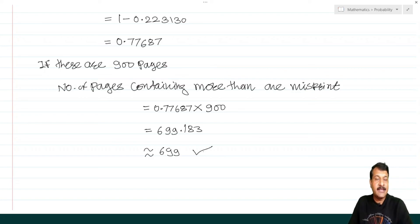In the next video we will continue with more examples on binomial and Poisson distribution, and also cover normal distribution.